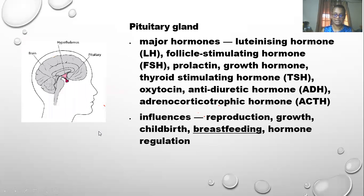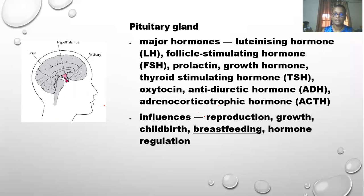The pituitary gland's major hormones are luteinizing hormone (LH), follicle-stimulating hormone (FSH), prolactin, growth hormone, thyroid-stimulating hormone (TSH), oxytocin, antidiuretic hormone (ADH), and adrenocorticotrophic hormone (ACTH). All of these hormones influence production, growth, childbirth, breastfeeding, and hormone regulation.